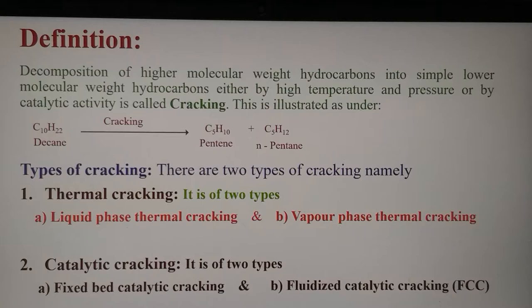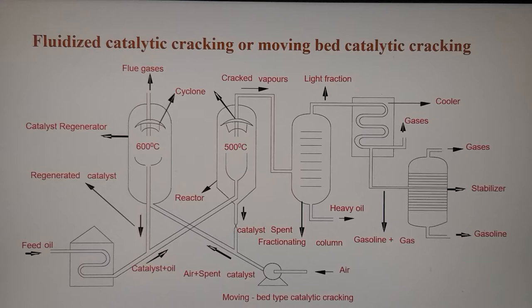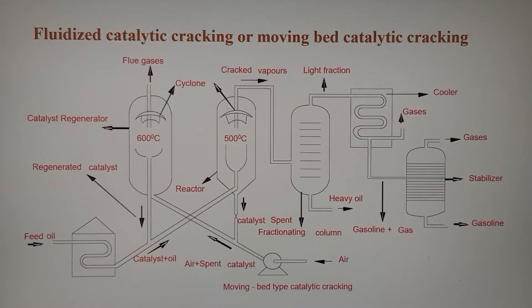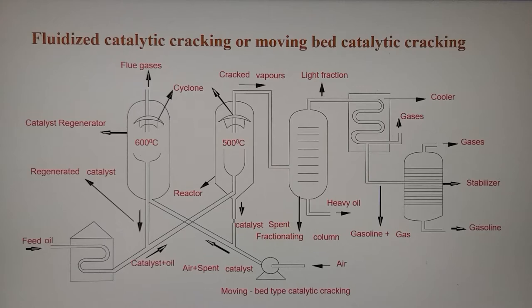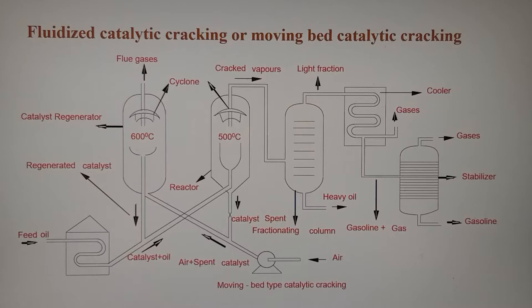Now we will learn in detail about FCC — fluidized catalytic cracking. In the diagram you can see there are two towers: one maintained at 600 degrees and the other at 500 degrees, along with an iron retort containing the feed oil. The feed oil in the iron retort is heated up to 400 degrees, and then from the retort the feed oil is pushed into the reactor, which is maintained at 500 degrees and contains the catalyst in a finely ground state.